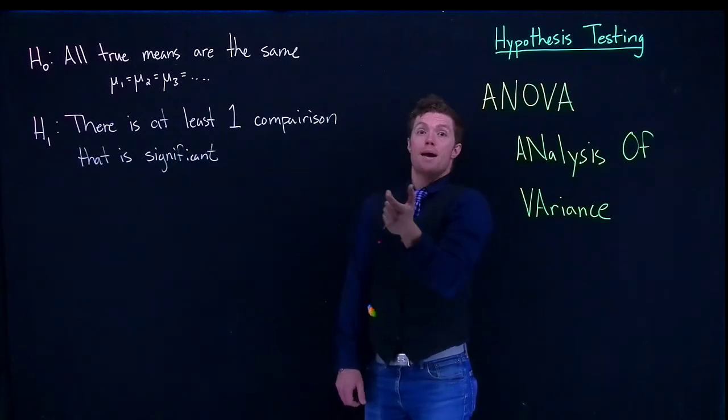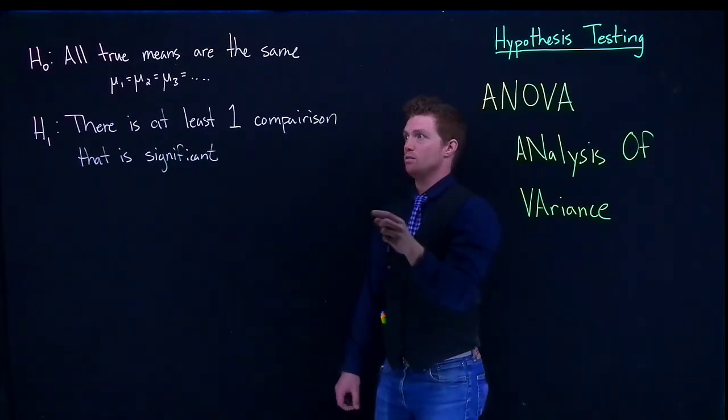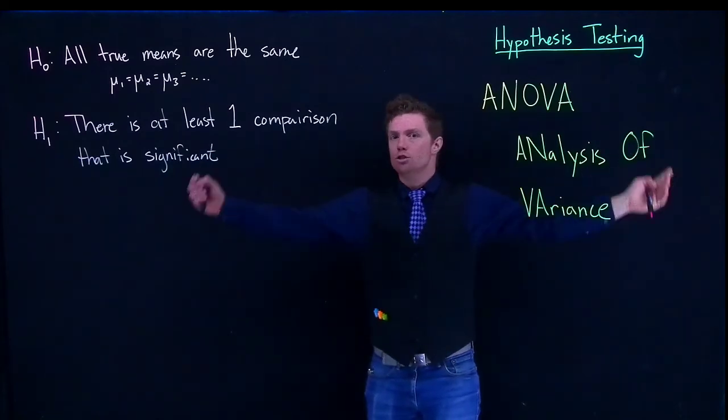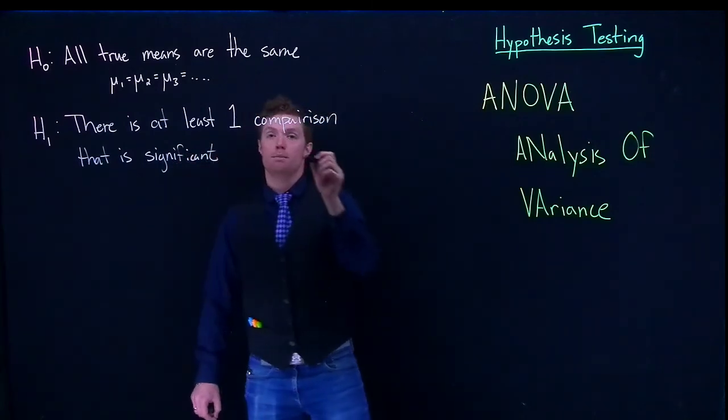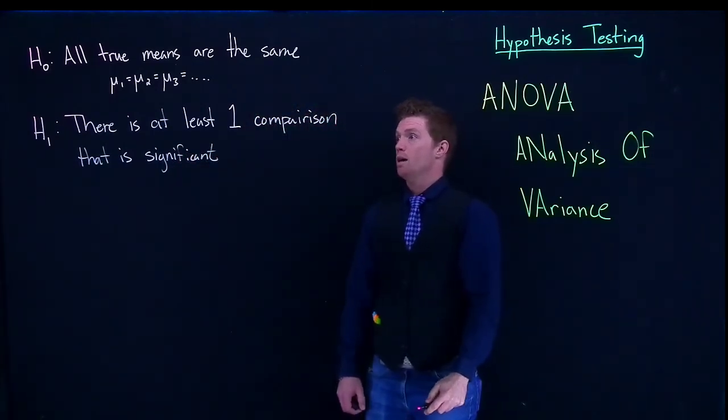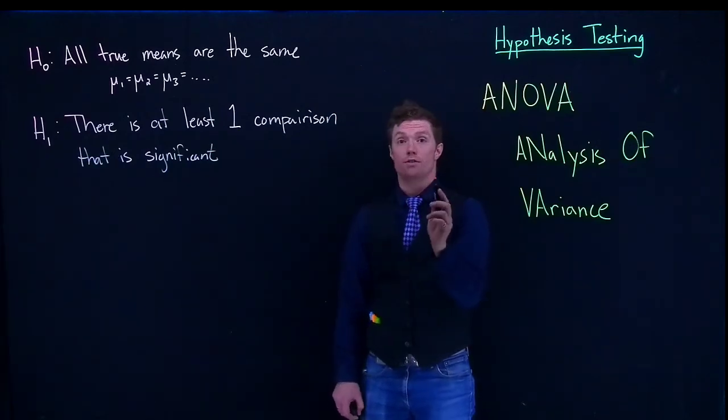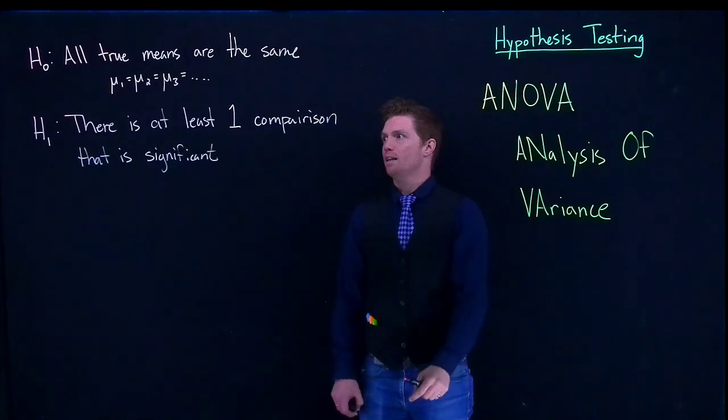There's at least one comparison that is statistically significant. So if we had a hundred groups and there's just one that was found to have a significant difference, then we would be able to conclude the alternative hypothesis. It's not that they're all different; it's just that we have to find one comparison that is different.